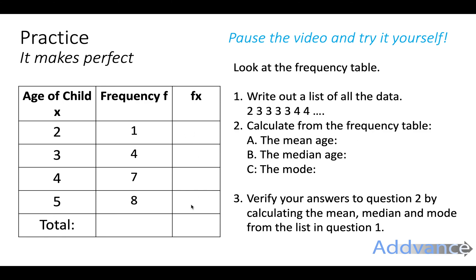Then I'd like to work out the mean age from the frequency table doing the fx column and the totals, the median age by finding where the middle person is, and the mode by looking for the most common age. Finally, I want you to verify your answers by looking at the list of data here and trying to find the mean, median, and mode in a simple way you learned earlier in school, just from a list of data. Pause the video now.